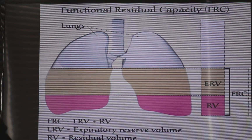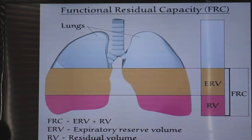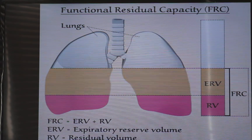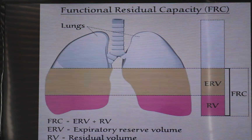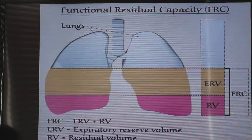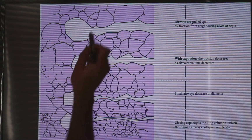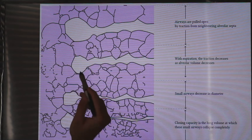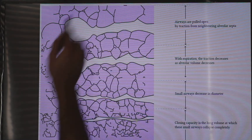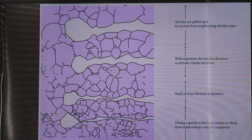There are many other factors, but now the last concept I want to talk about is the closing capacity. This refers to the alveoli and the lung tissue around the alveoli.